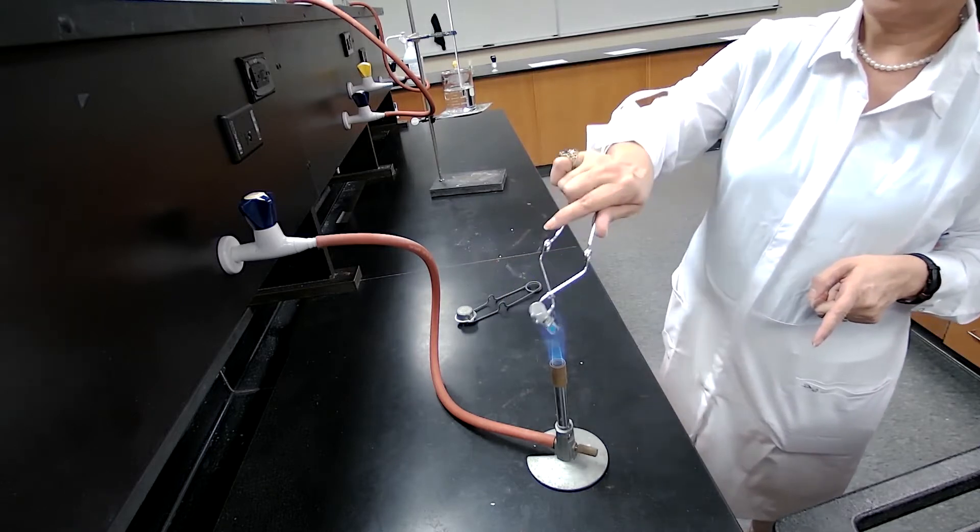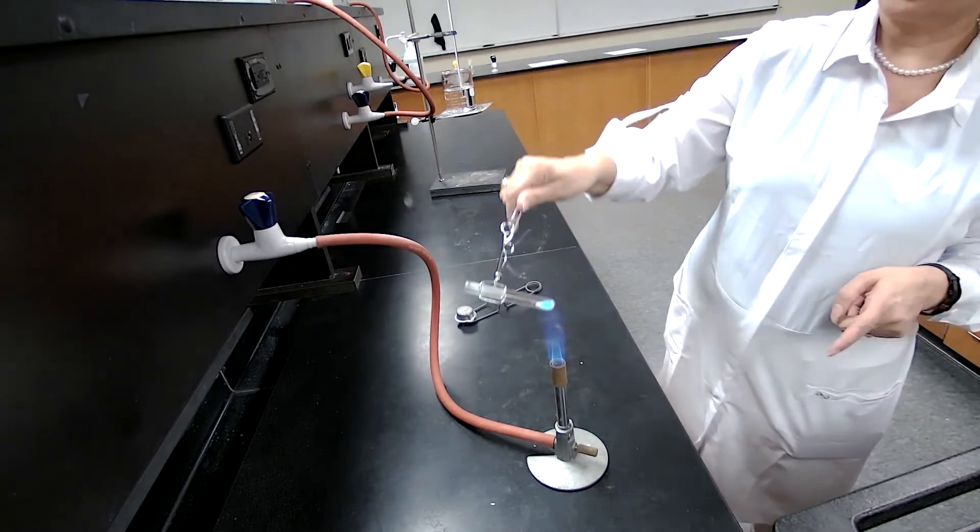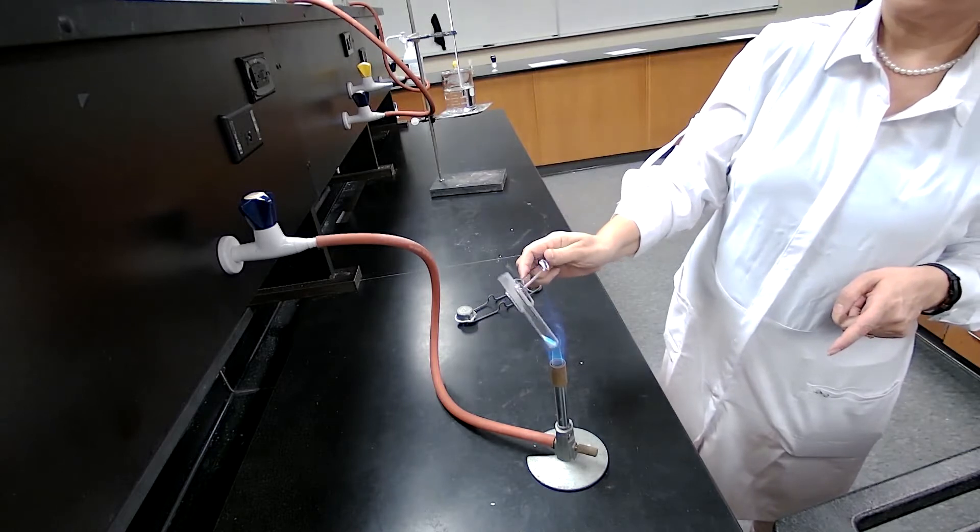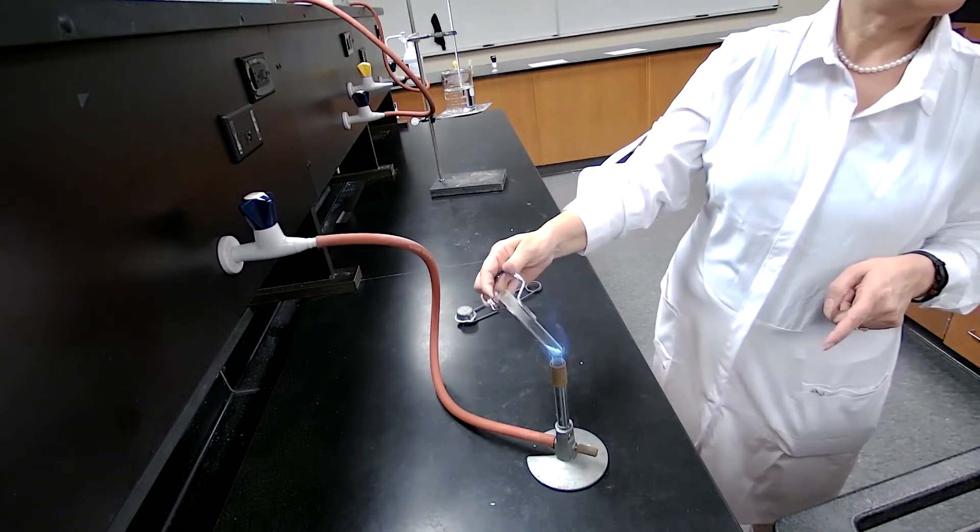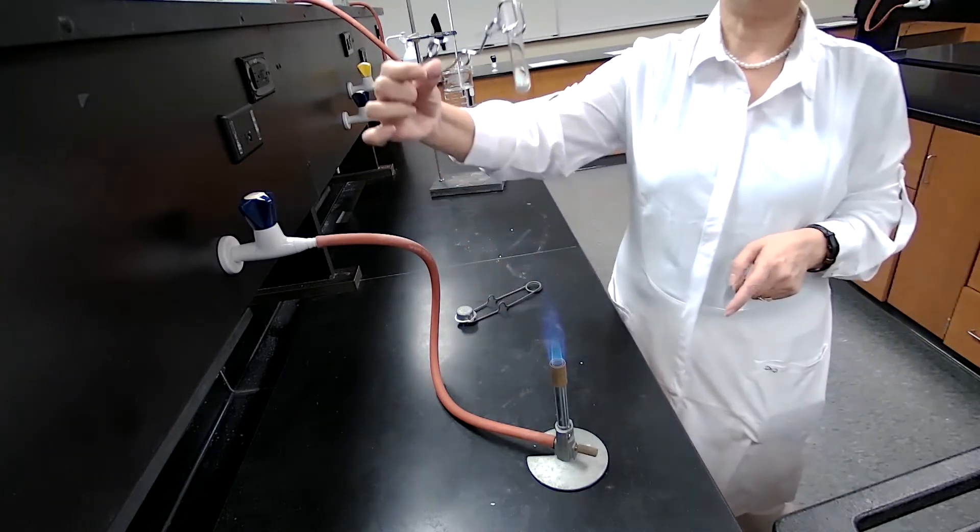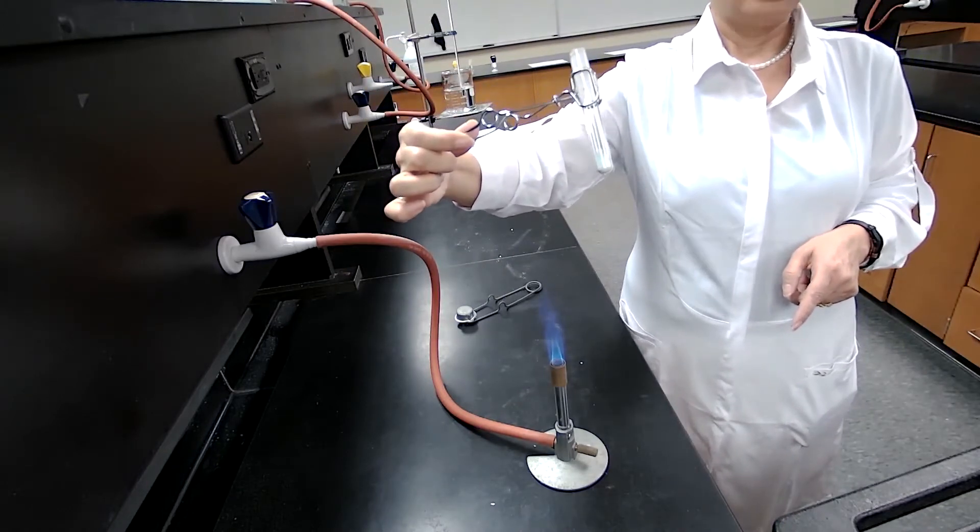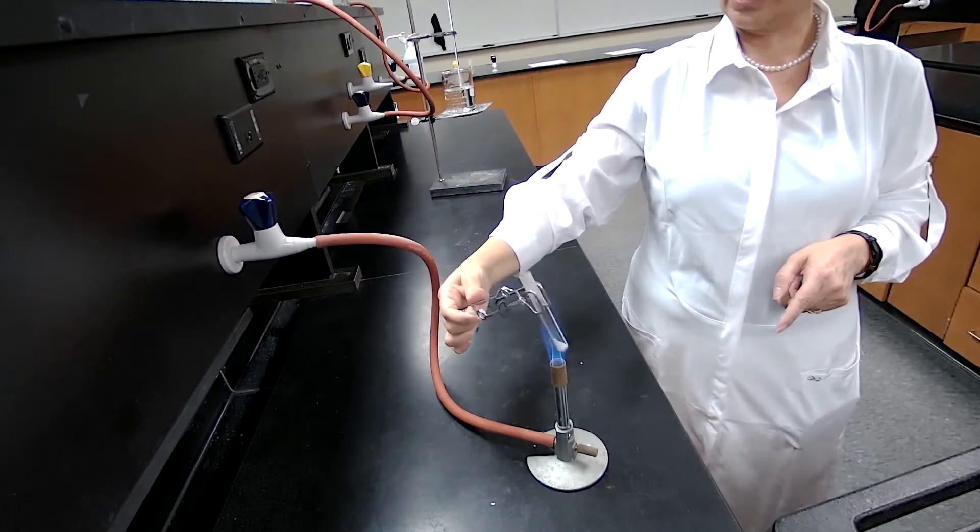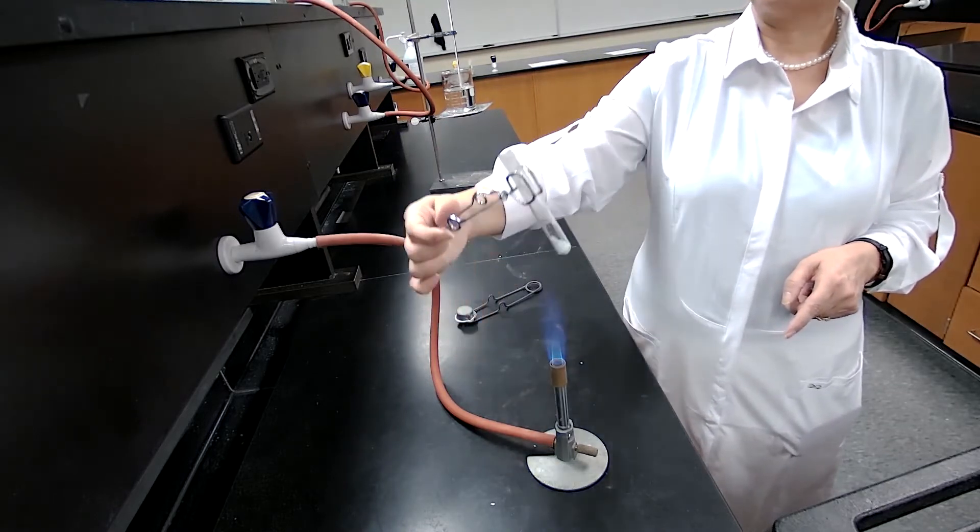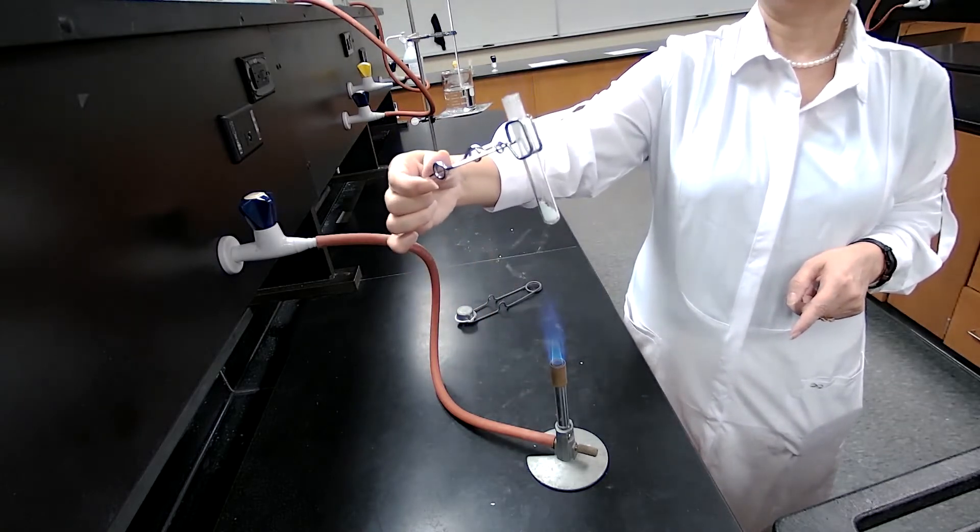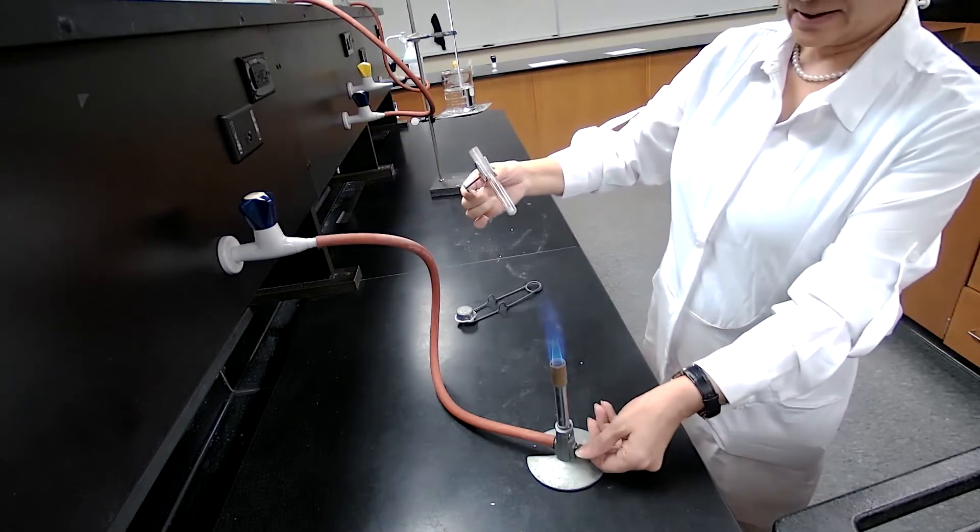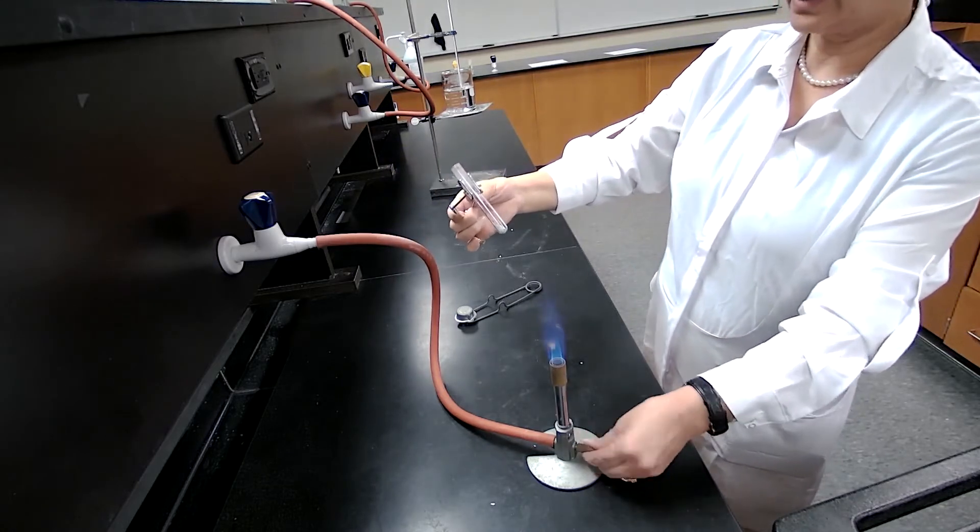And also we see a color change of the sample. So the blue color is disappearing and the white color appears. So there is a color change here and copper sulfate has lost the water.